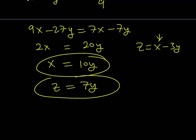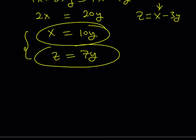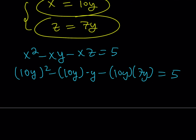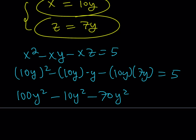Once we have these relationships, we can substitute into one of the original equations. Let's use the first equation: x squared minus xy minus xz equals 5. Replacing x with 10y and z with 7y: (10y) squared minus (10y)(y) minus (10y)(7y) equals 5. That simplifies to 100y squared minus 10y squared minus 70y squared equals 5, which gives 20y squared equals 5.